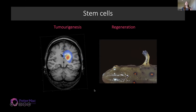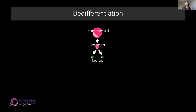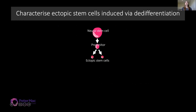One of the main things they have in common is the process of de-differentiation. De-differentiation of neurons occurs when they lose their mature identity and adopt stem-like properties, and they can then form ectopic stem cells. Today I want to talk about how characterising ectopic stem cells that are induced by de-differentiation can teach us many things.